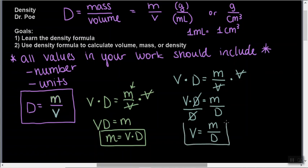So from that one equation, we now have three equations. Density equals mass over volume. Mass equals volume times density. And volume equals mass over density.